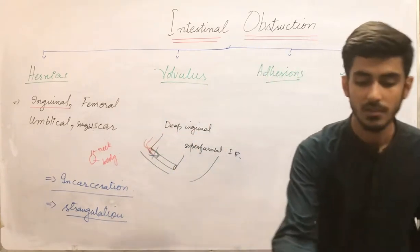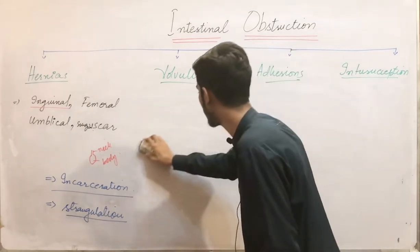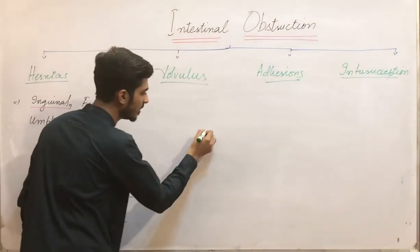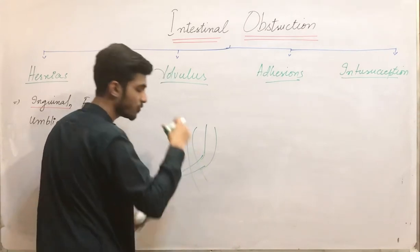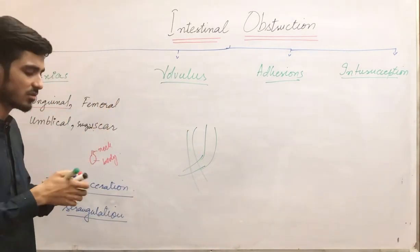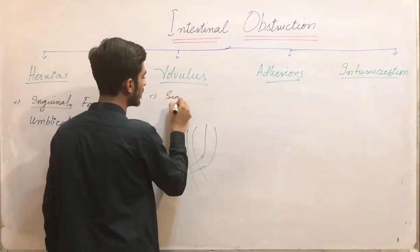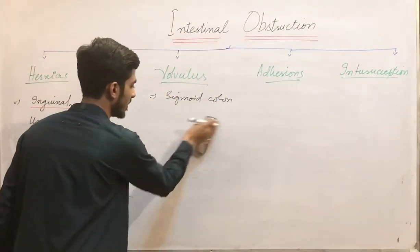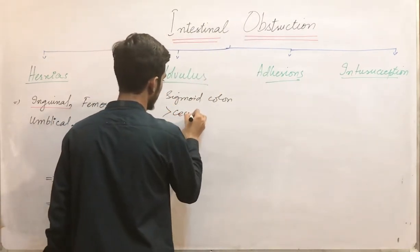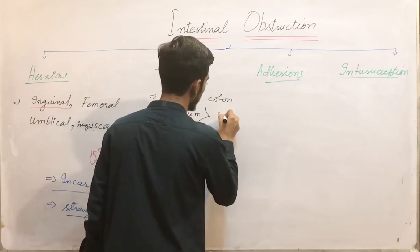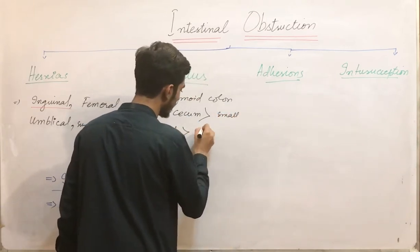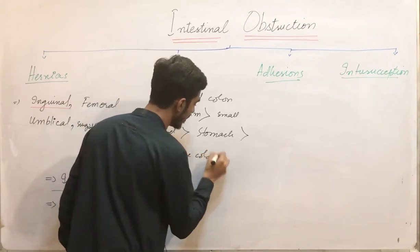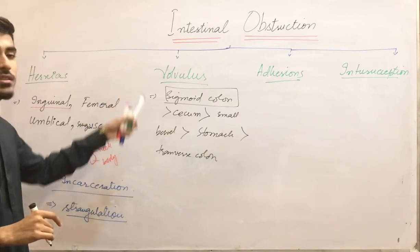Now moving on to volvulus. Volvulus is the twisting of the intestine around itself. Where is it most common? Volvulus is most common in the sigmoid colon. After sigmoid colon, it is common in the cecum, then in the small bowel, then in the stomach, and very rarely in the transverse colon. The most important location to remember is the sigmoid colon.